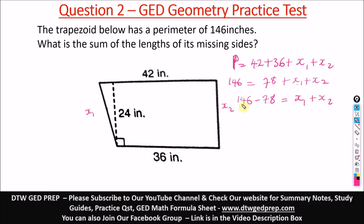So here, 146 minus 78 will give us 68 equals x1 plus x2. So here's our answer. It says what is the sum of the length of its missing sides? The sum of the length of the missing sides is 68 inches. Don't forget the units, inches. This is the answer for question two.